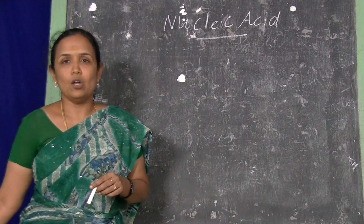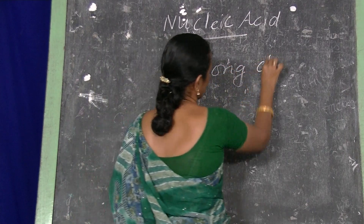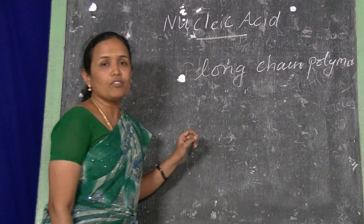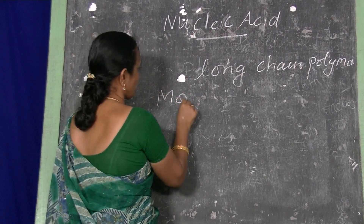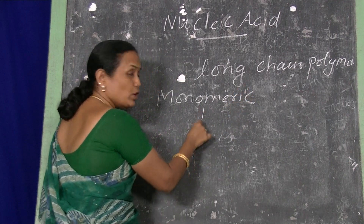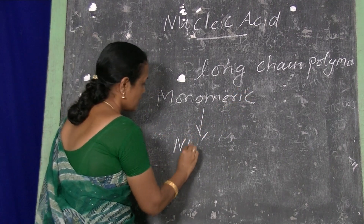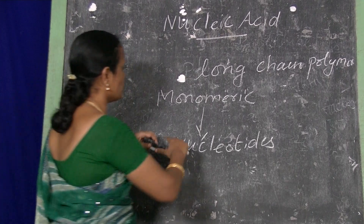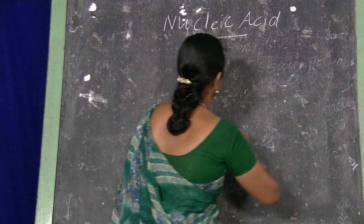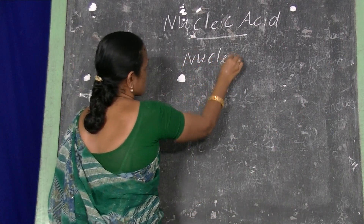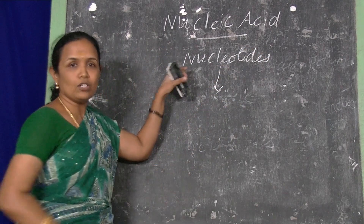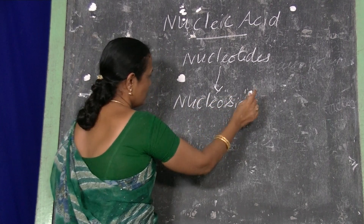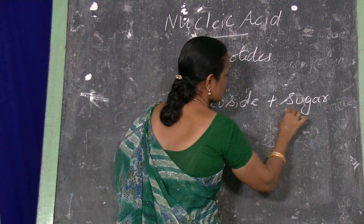Nucleic Acid is a long chain polymer. Nucleic Acid is made up of many monomeric units, and this monomeric unit is called nucleotides.